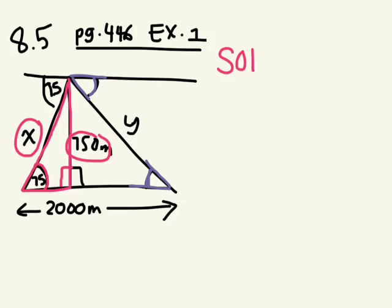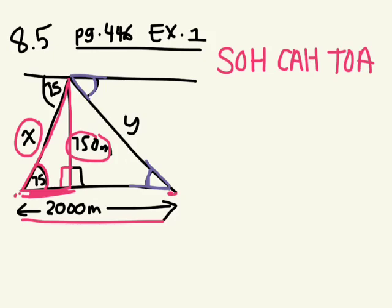SOH CAH TOA. So let's label our sides of the triangle. Do we know this side length here? From here to here, do we know that measurement? No, we know that the total distance from here to here is 2000, but we actually don't know this little part here.